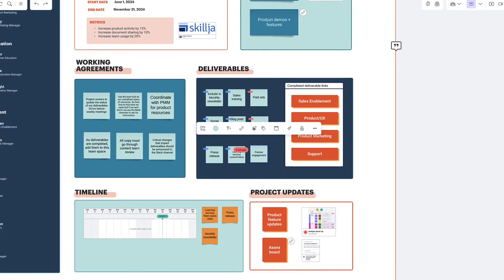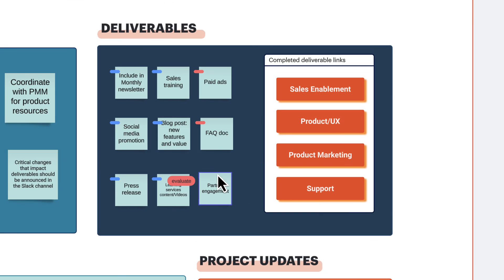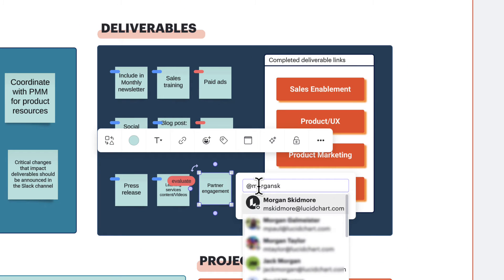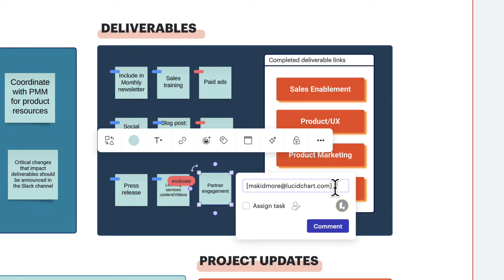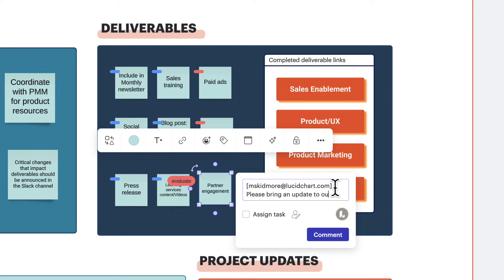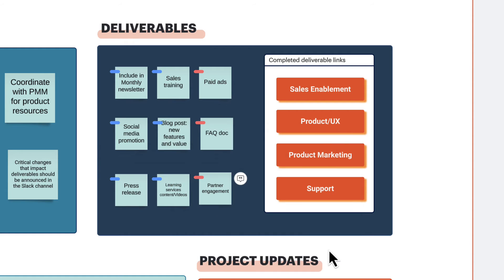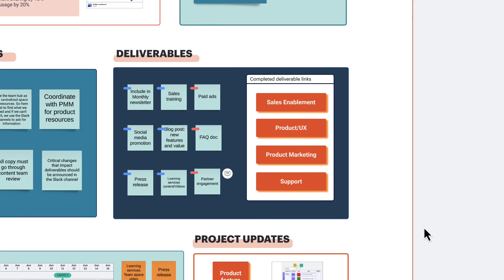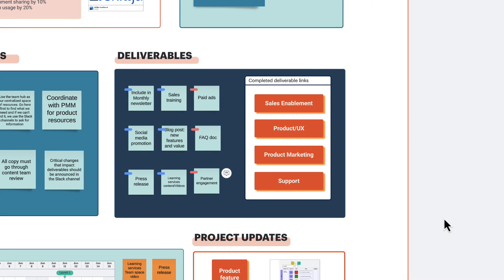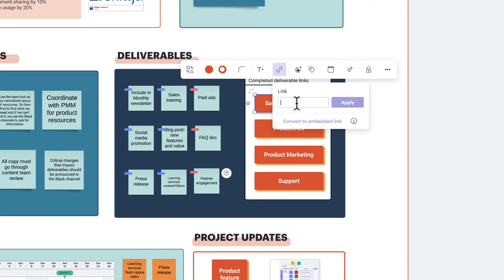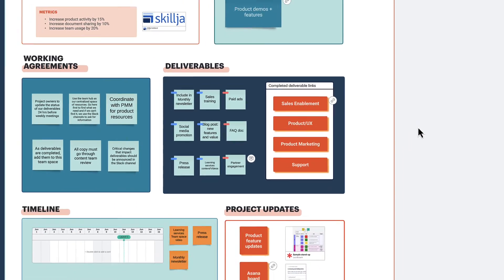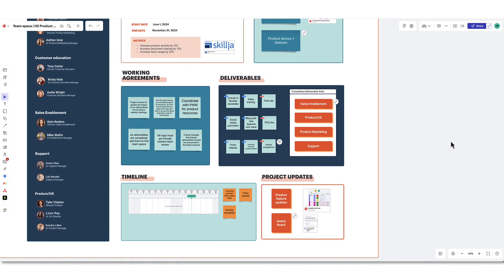For ideas that need to be evaluated, add a comment to the sticky note with an at mention for the owner to follow up in the next meeting, and click Assign Task then Assign. Sort them into categories and then pull them into the main board. As those deliverables are completed, everyone will add links to those deliverables here to make it easier for everyone to access in one place.